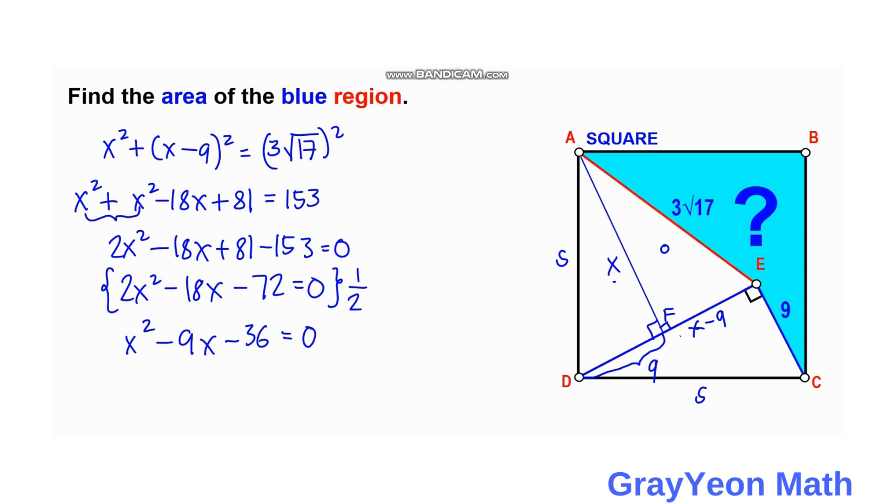And thinking of factors of 36 that will give us a sum of negative 9, that is actually (X minus 12) times (X plus 3). So negative 12 times 3 is negative 36, and if we add that, then we have negative 12 plus 3 is negative 9.